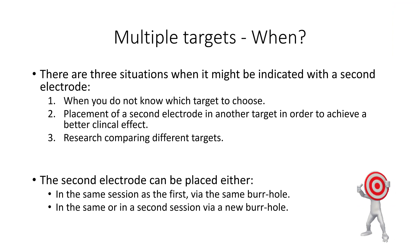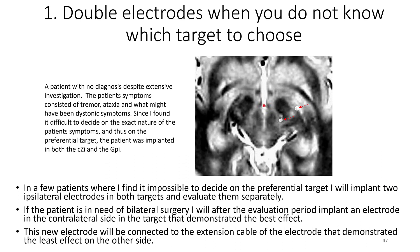As I see it, there are mainly three situations when a second electrode might be indicated. First, you might use it when you don't know which target to choose — like in a patient with unclear diagnosis presenting with dystonic symptoms and tremor, implanted both in the PSA and GPI. To combine the GPI and the VIM or PSA is probably the most common combination of non-aligned targets, used for patients with dystonic tremor. This combination is rather simple to manage, since both the symptoms and the effects of stimulation in the two targets are quite distinct, and stimulation of both targets will often be beneficial.